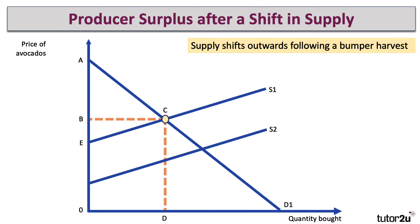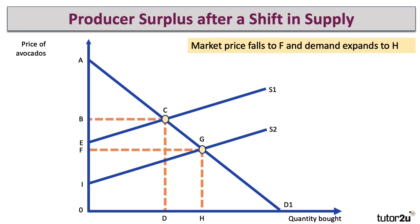Now let's assume that there's a bumper harvest or a fall in production costs — say, an increase in the productivity of production — which shifts supply outwards and downwards from S1 to S2. Effectively, the costs of supply have gone down. Other things being the same, the market price will fall from B to F.